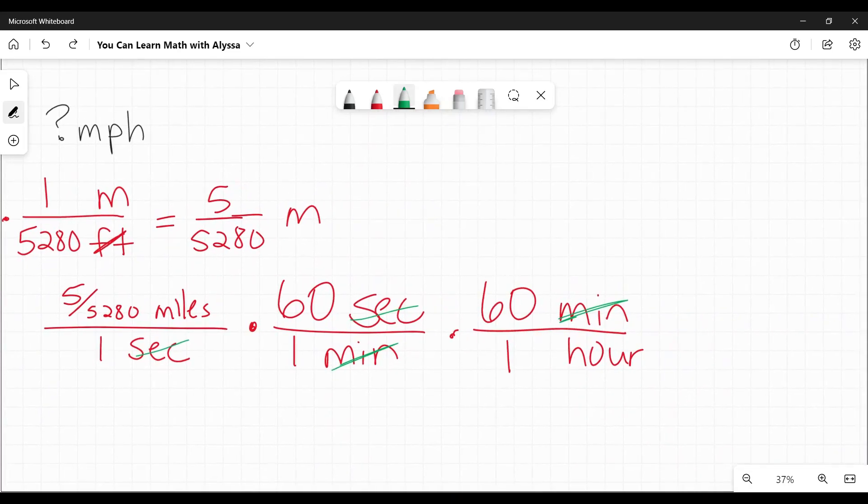So now I'm just going to multiply everything that's on top. So my calculator, I'm going to enter five divided by 5,280. And I get this long decimal that doesn't stop easily. Then I'm going to hit multiply by 60 and then multiply by 60 again. And I get 3.4, I'm going to round to the hundredths, 3.41 miles per hour.